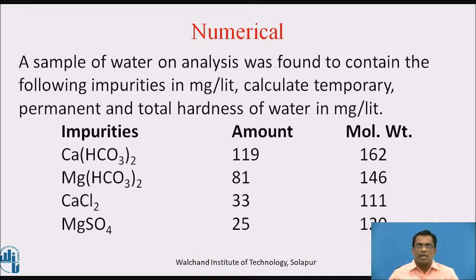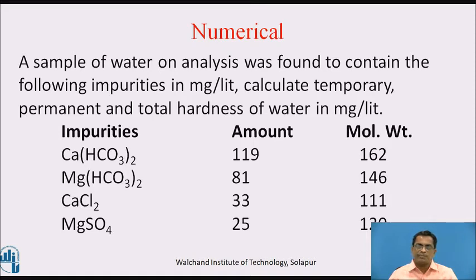Second numerical: A sample of water on analysis was found to contain the following impurities in milligrams per litre. Calculate temporary, permanent, and total hardness of water. Calcium bicarbonate: 119 mg/L, magnesium bicarbonate: 81 mg/L, calcium chloride: 33 mg/L, magnesium sulphate: 25 mg/L.